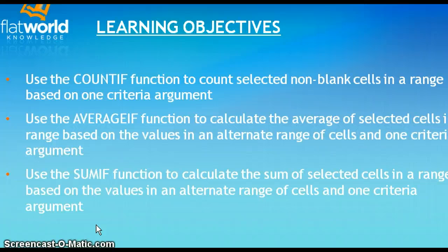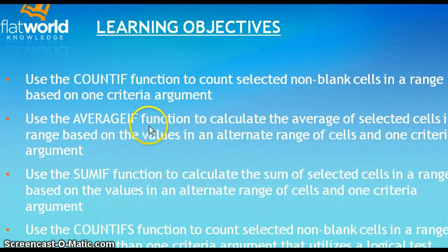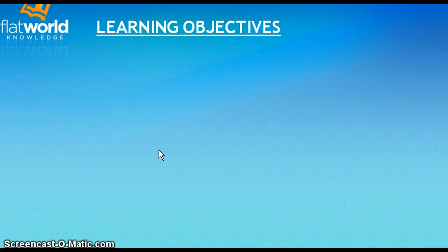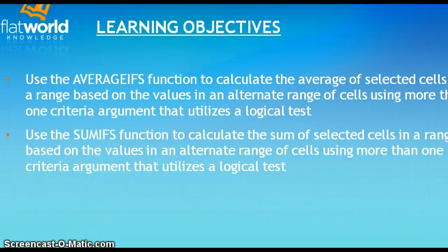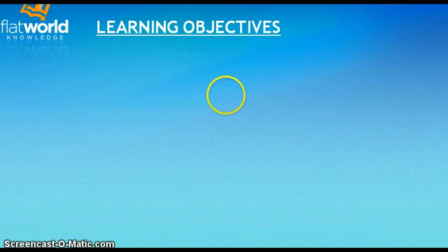We'll talk about constructing those arguments correctly so you can get the answer you need. The COUNTIFS and SUMIFS functions are for multiple ranges or alternate ranges of values. These functions are basically the same as AVERAGEIF and SUMIF, but they do allow you to make alternate ranges of cells using more than one argument — and that's the most important distinction between the two.